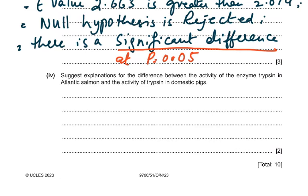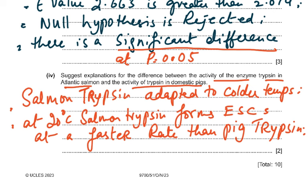The last part asks you to suggest an explanation for the difference between the activity of trypsin in Atlantic salmon and trypsin in domestic pigs. 'Suggest' questions are always challenging. Using information from the question: salmon trypsin is adapted to colder temperatures, so at 20 degrees Celsius, salmon trypsin forms enzyme-substrate complexes at a faster rate than pig trypsin. Any other valid point would also be accepted. That was 10 marks total, completing this paper 5. I hope this is helpful and you all do very well in the upcoming paper 5.